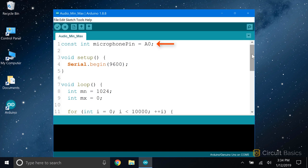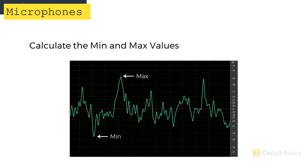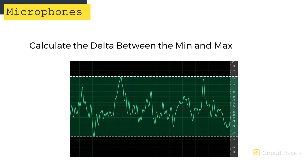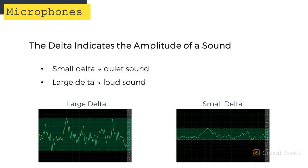Here's the sketch. First we declare a variable for the microphone's input pin and set it equal to analog pin 0. Then we initialize the serial monitor. To capture the fluctuating audio signal, we'll take a series of analog reads from the microphone pin, then calculate the minimum and maximum values measured in that series. Then we'll calculate the difference, or delta, between the minimum and maximum values. The value of the delta will give us an idea of the volume of sound detected - a smaller delta corresponds to a quieter sound, and a larger delta corresponds to a louder sound.